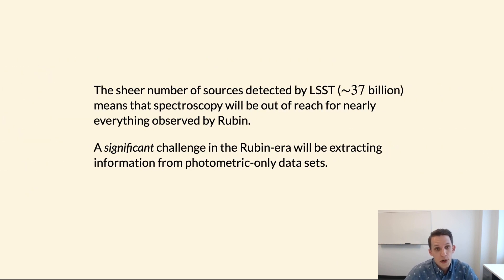So, the sheer number of sources detected by LSST, as a reminder, that's about 37 billion, means that spectroscopy is out of reach for essentially everything. We're talking a tiny fraction of everything that is observed by the Rubin Observatory will actually get a spectrum at some point in time. So, a significant, and possibly the most significant challenge in the Rubin Observatory era, will be extracting information from photometric-only datasets.